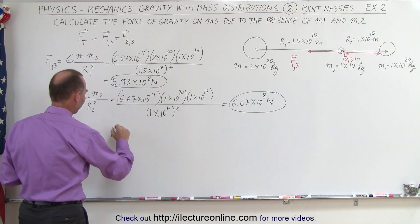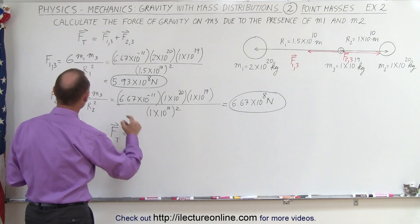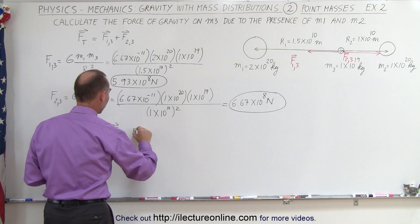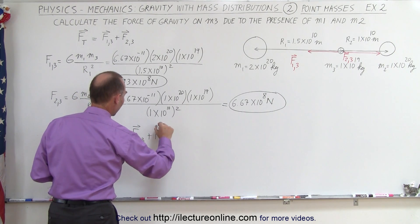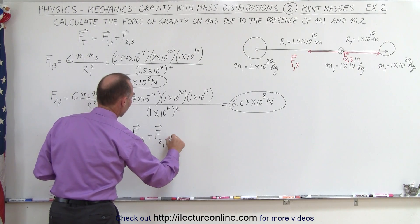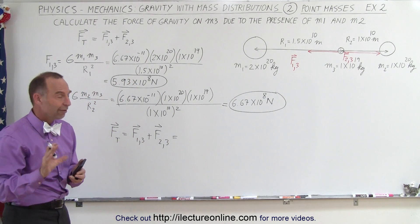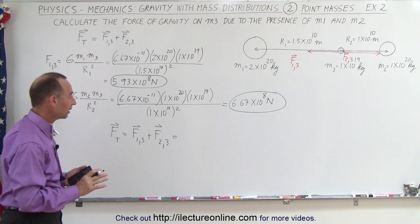So F total, as a vector, is equal to the vector sum of the other two vectors. That will be F13 plus F23. Now when we plug in what those vectors are equal to, we have to make sure we put in the signs correctly.